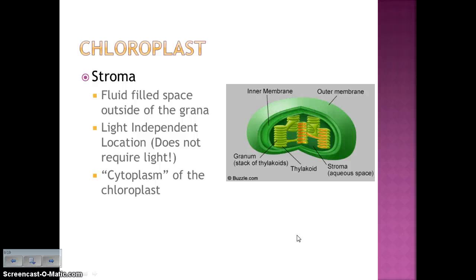Outside of the thylakoids, you have what I call the cytoplasm of the chloroplast — that's the stroma. This is the fluid-filled space outside of the grana, and this is where the light-independent reactions take place. There does not need to be light for this part of photosynthesis to take place. That is the major difference: light-dependent reactions require light; light-independent reactions do not require light.